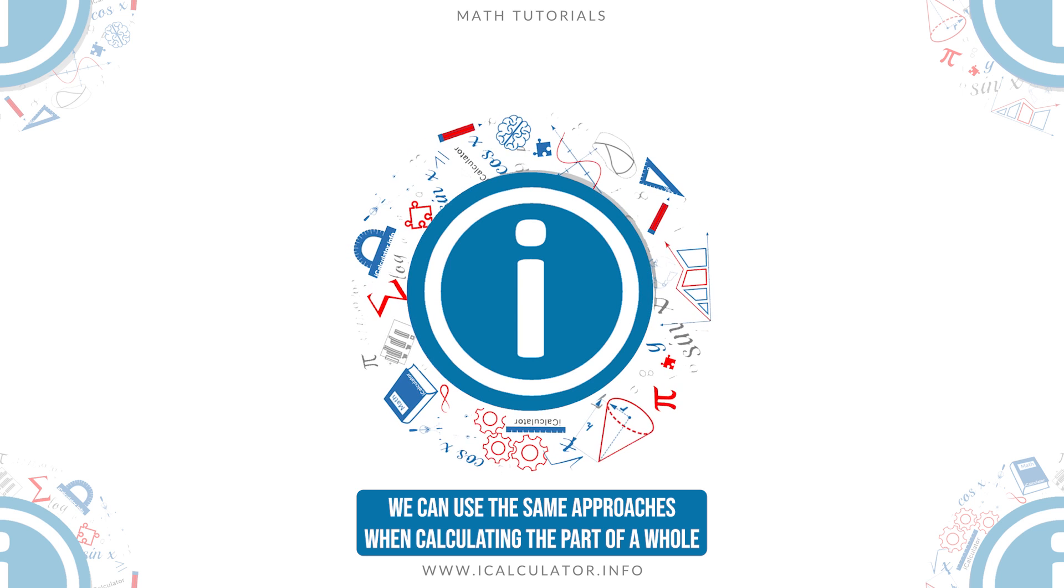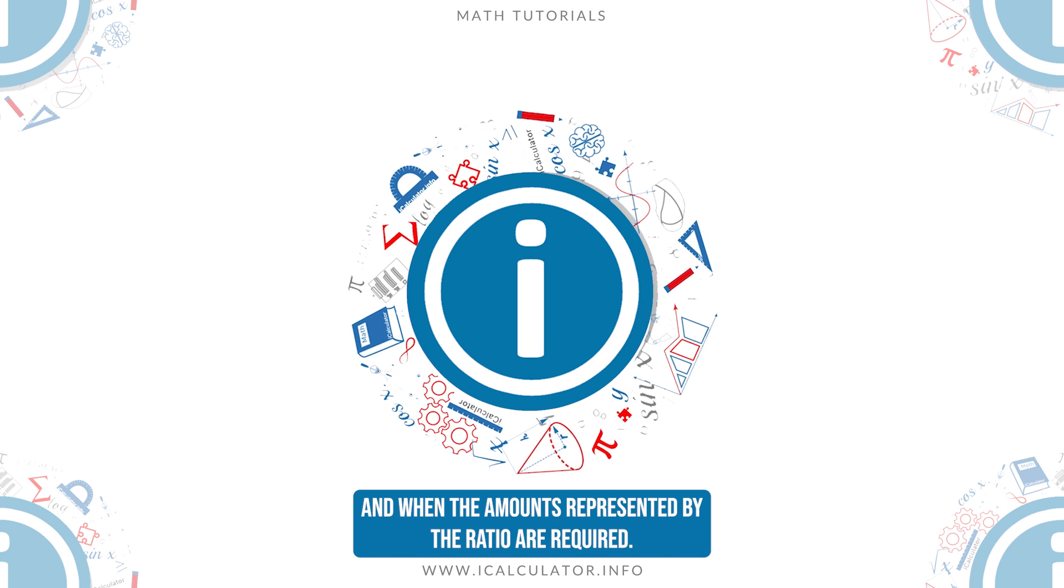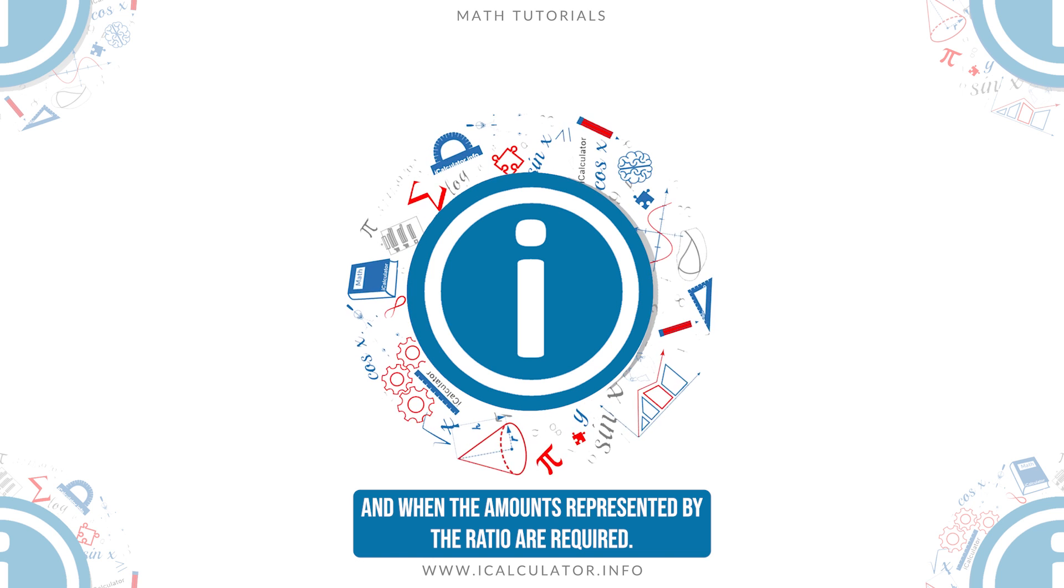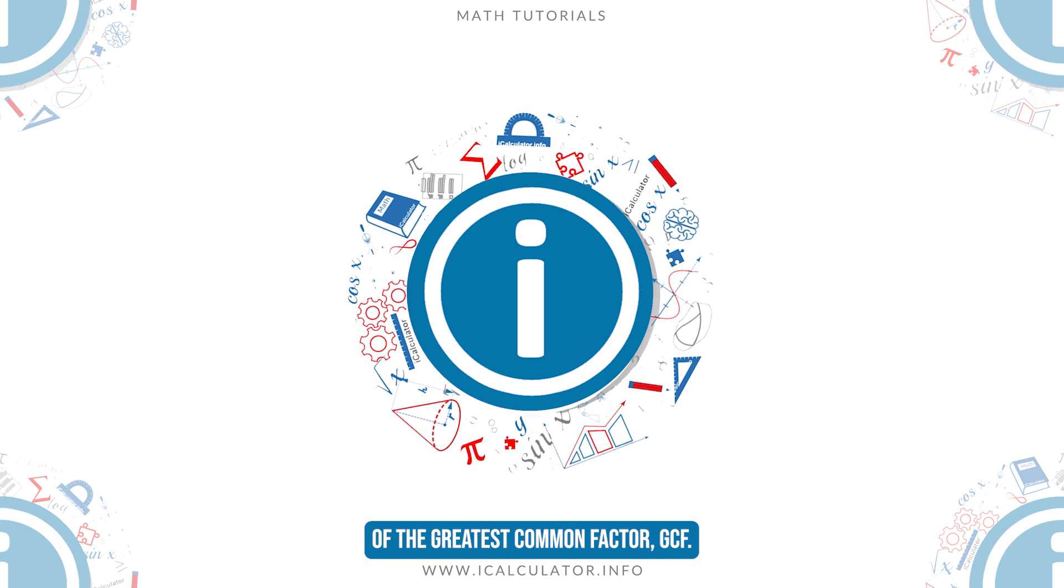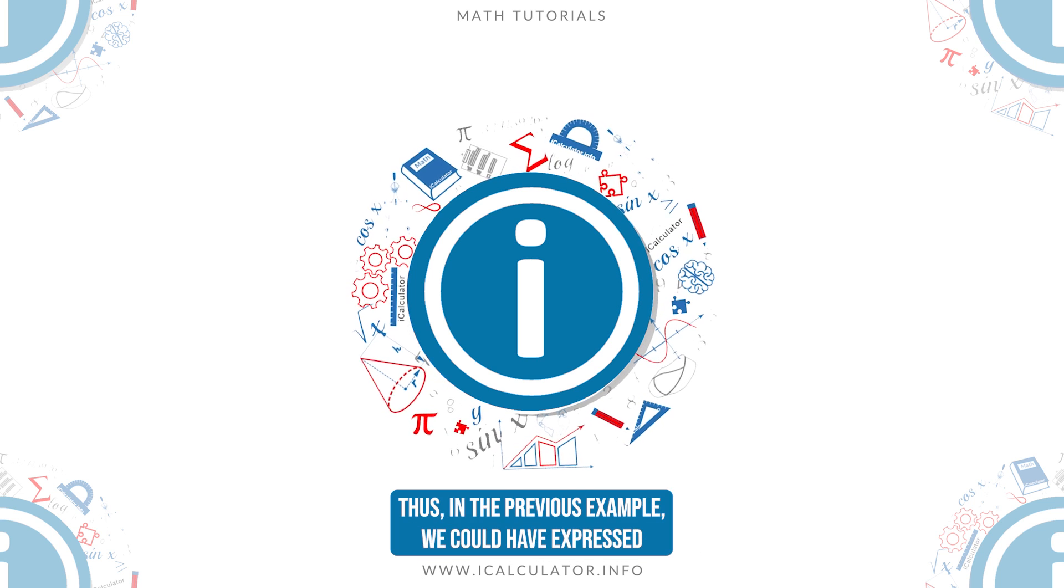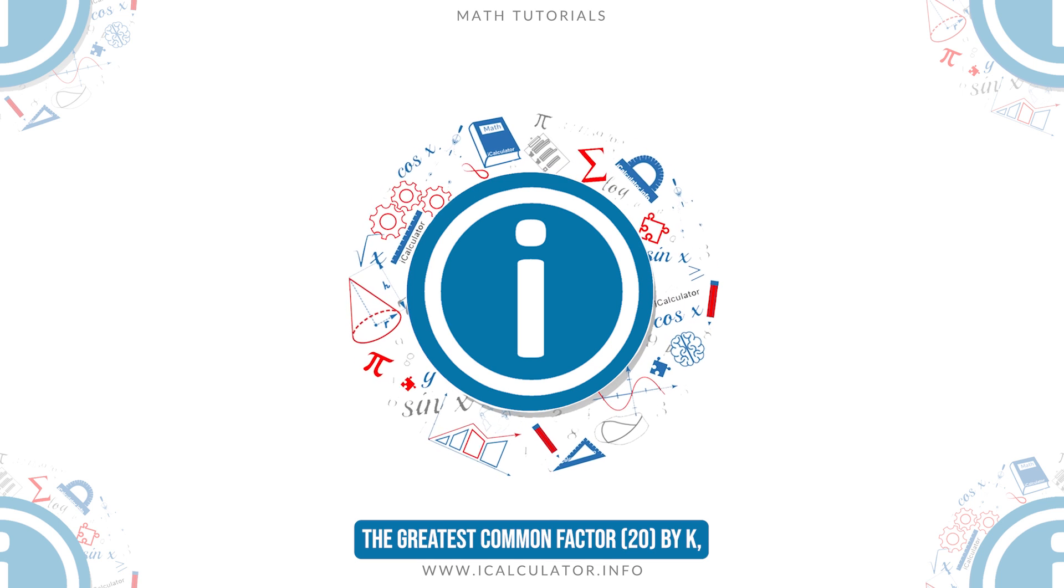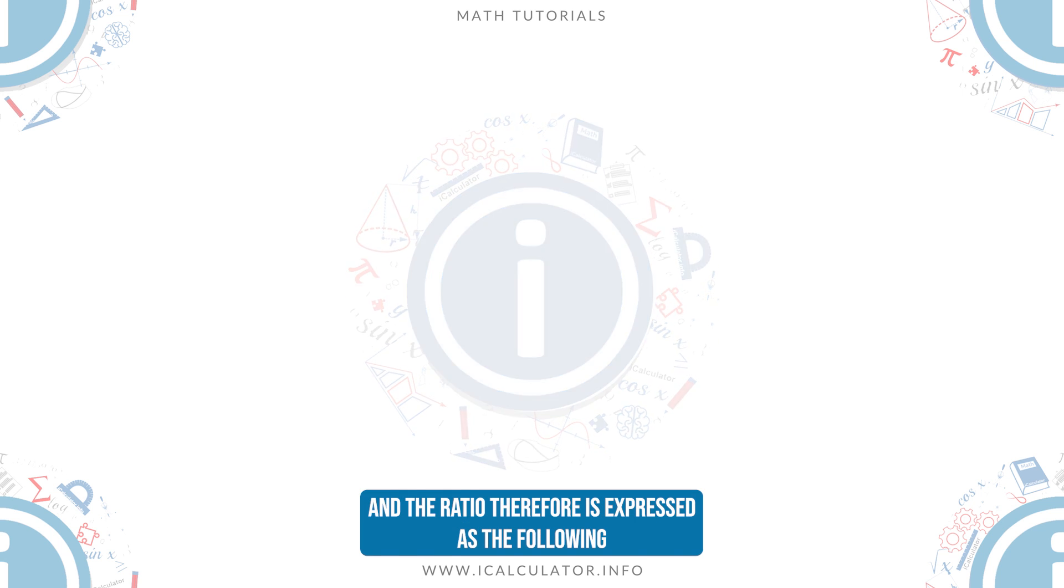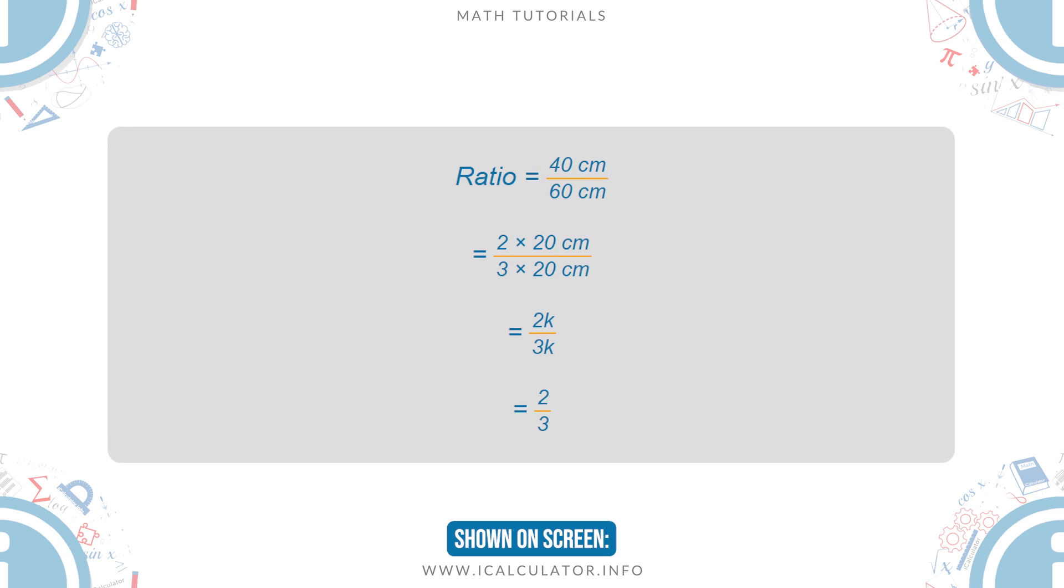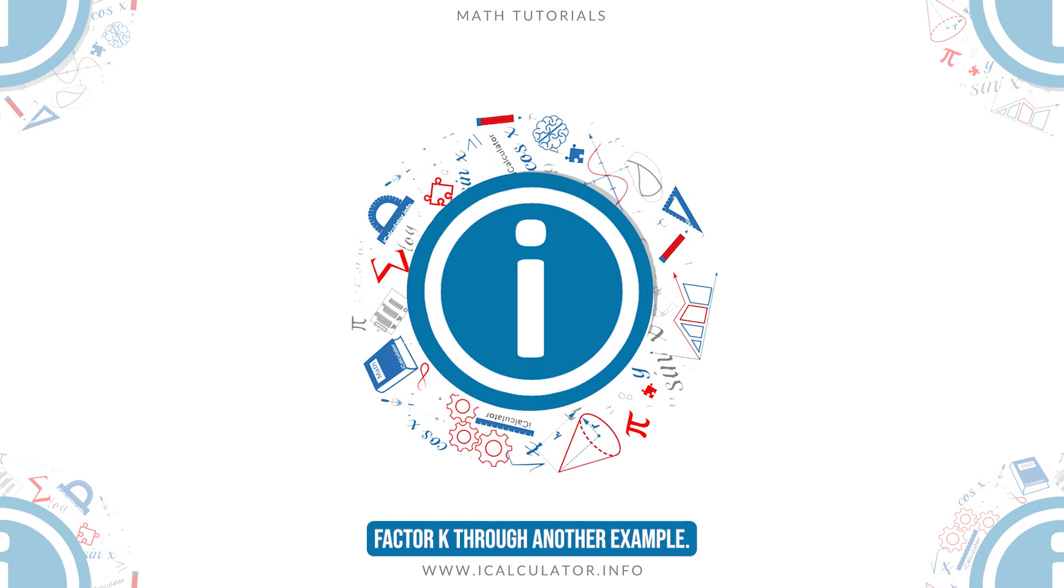We can use the same approaches when calculating the part of a whole if we know the total and the ratio, and when the amounts represented by the ratio are required. In such situations, it is better to operate in terms of the greatest common factor, GCF. Thus, in the previous example, we could have expressed the greatest common factor, 20, by K. And the ratio therefore is expressed as the following shown on screen. Let's see the utility of the greatest common factor, K, through another example.